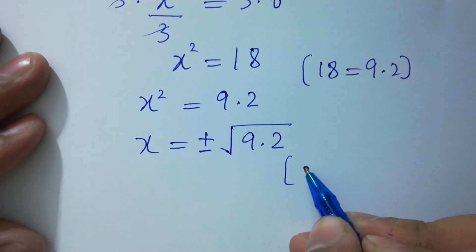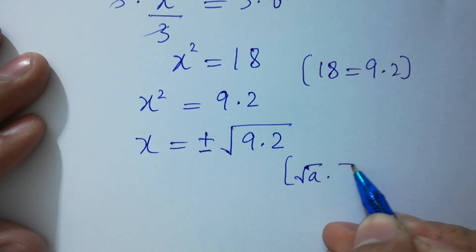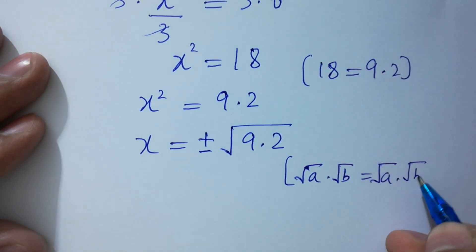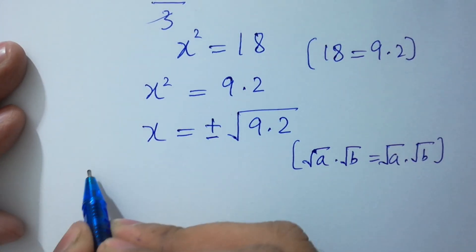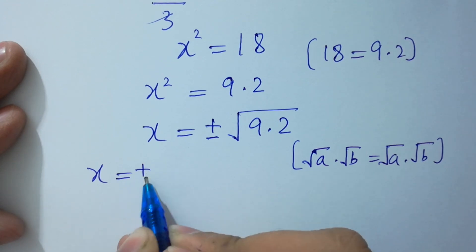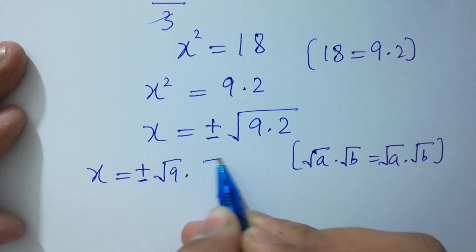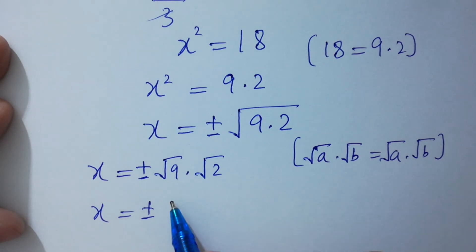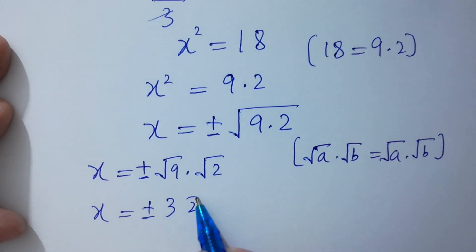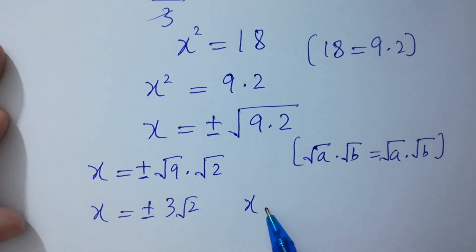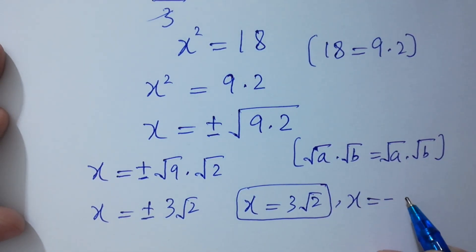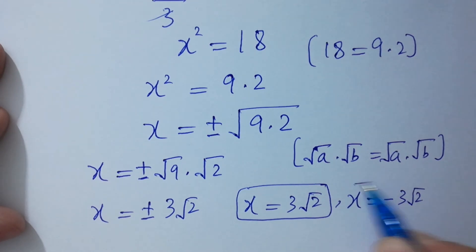x equals plus or minus square root of 9 times 2. Since square root of a times b equals square root of a times square root of b, it will be equal to x equals plus or minus square root of 9 is 3, times square root of 2. So we have x equals 3 square root of 2 and x equals minus 3 square root of 2.